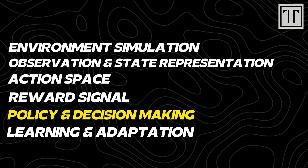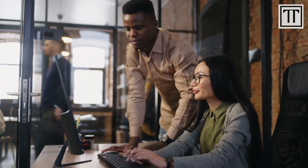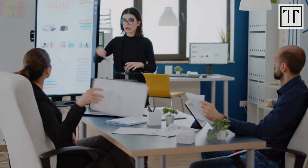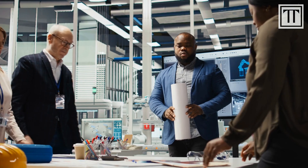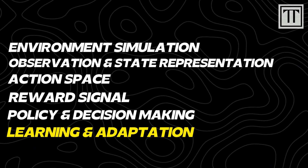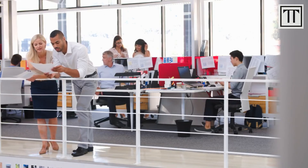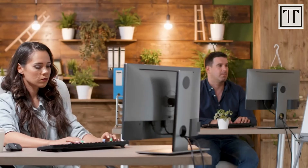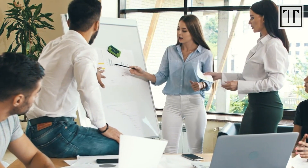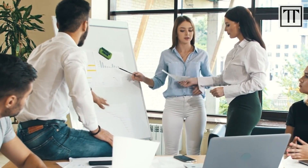Fifth, policy and decision-making: the policy determines how an agent selects actions based on its current state. Frameworks typically offer a variety of algorithms — such as Q-learning and policy gradients — to optimize this decision-making process. Sixth, learning and adaptation: AI agents can learn and adapt through supervised, unsupervised, or reinforcement learning techniques. This capability allows them to improve their performance over time and adapt to new challenges.